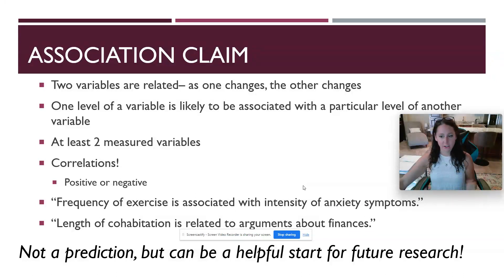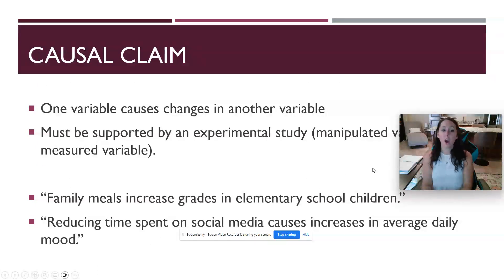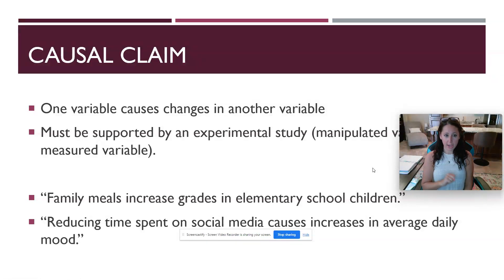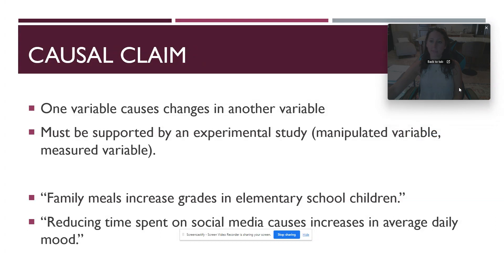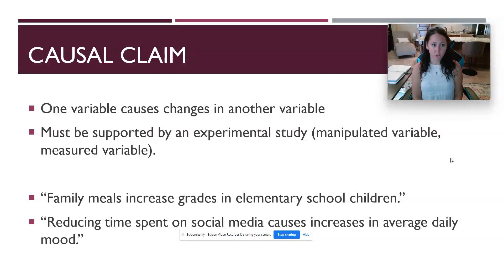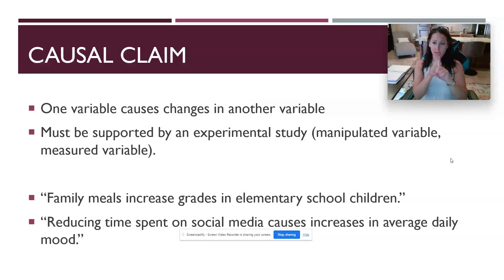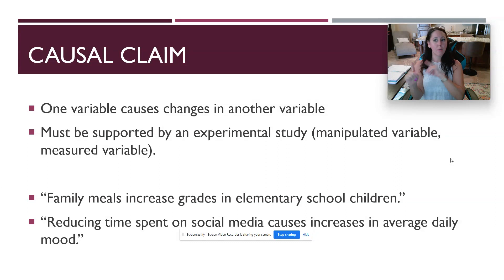Let's say I want to take this study and turn it into cause and effect — I would then be switching to a causal claim. A causal claim is when I've had the appropriate research methods and statistical analysis to document that one variable causes changes in another variable. This must be supported by a research study that has employed experimental methods, meaning I've been able to randomly assign participants to groups for an experimental group and a control group, with a manipulated variable and a measured variable.